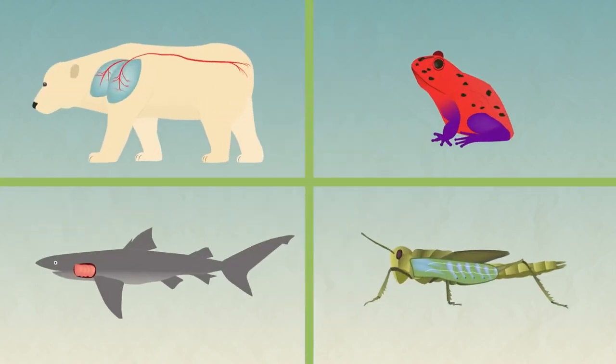So there you have it. Animals have developed different systems to achieve the same thing: take oxygen out of the air and put carbon dioxide in it.